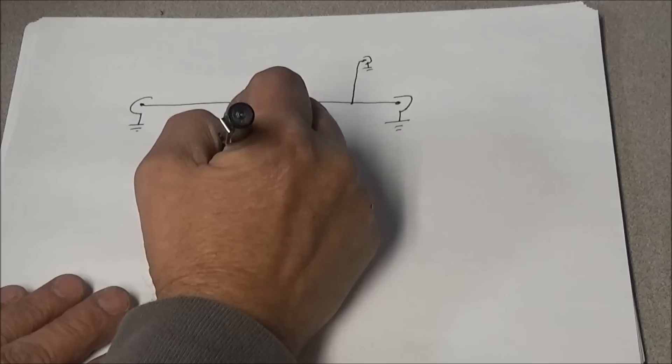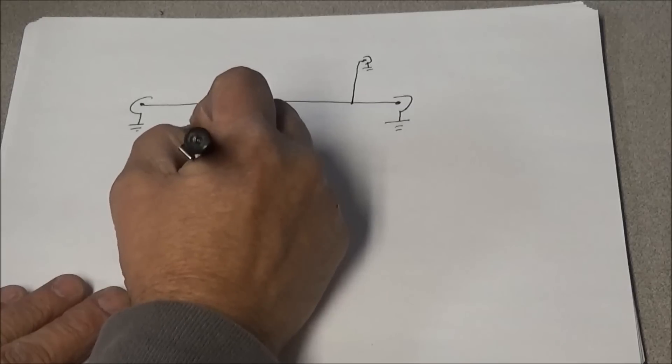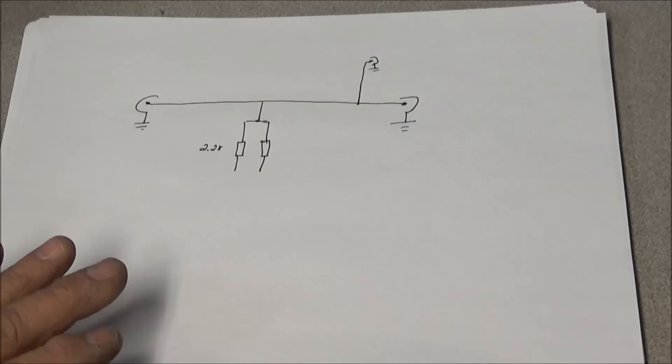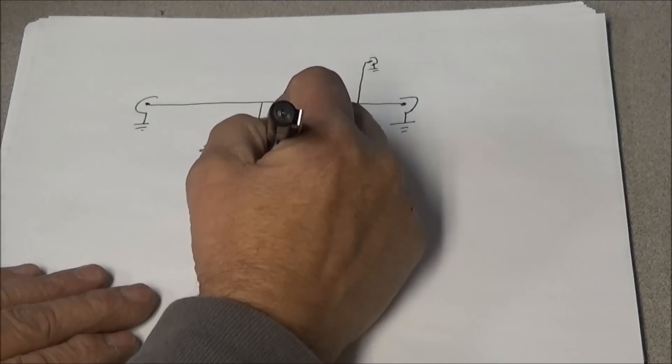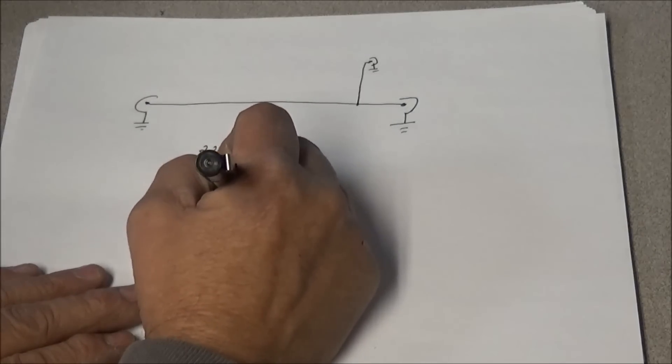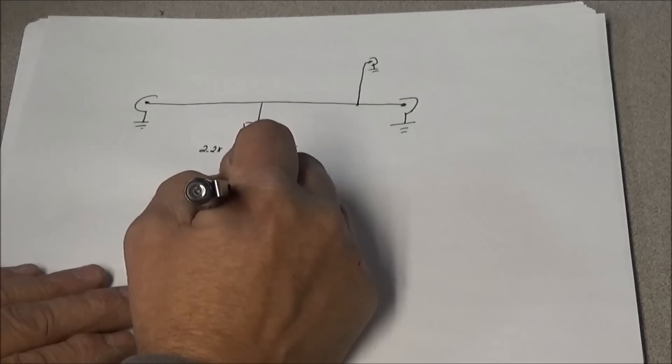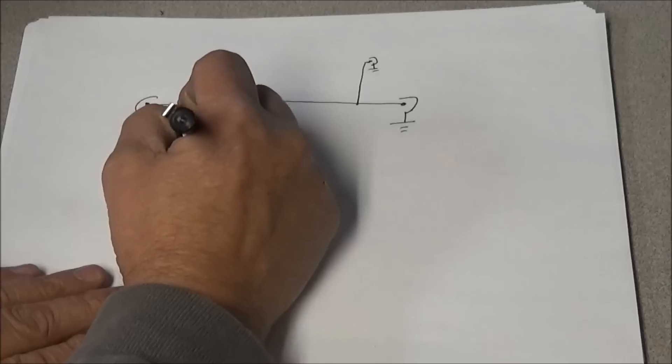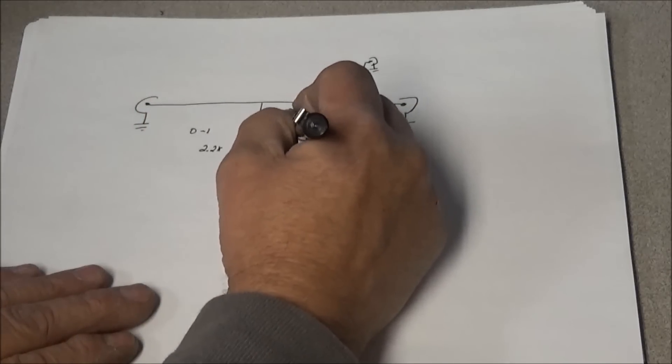So what we're going to do is come off here and we're going to install two resistors. This one is 2.2k and this one happens to be a 10k. So what we're going to do is run this to a switch so we can switch between the two. The 2.2k will be our 0 to 1 watt and the 10k side will be from 0 to 10 watt.